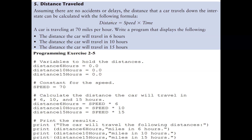To find the distance we use speed times time. We know the speed is 70 miles per hour. So the distance in six hours will be 70 times 6, in ten hours it will be 70 times 10, and in fifteen hours it will be 70 times 15. Now let's look at the Python code. We need to store the results in variables, or we can write the formula inside the print function — in that case we don't need to store the results separately.